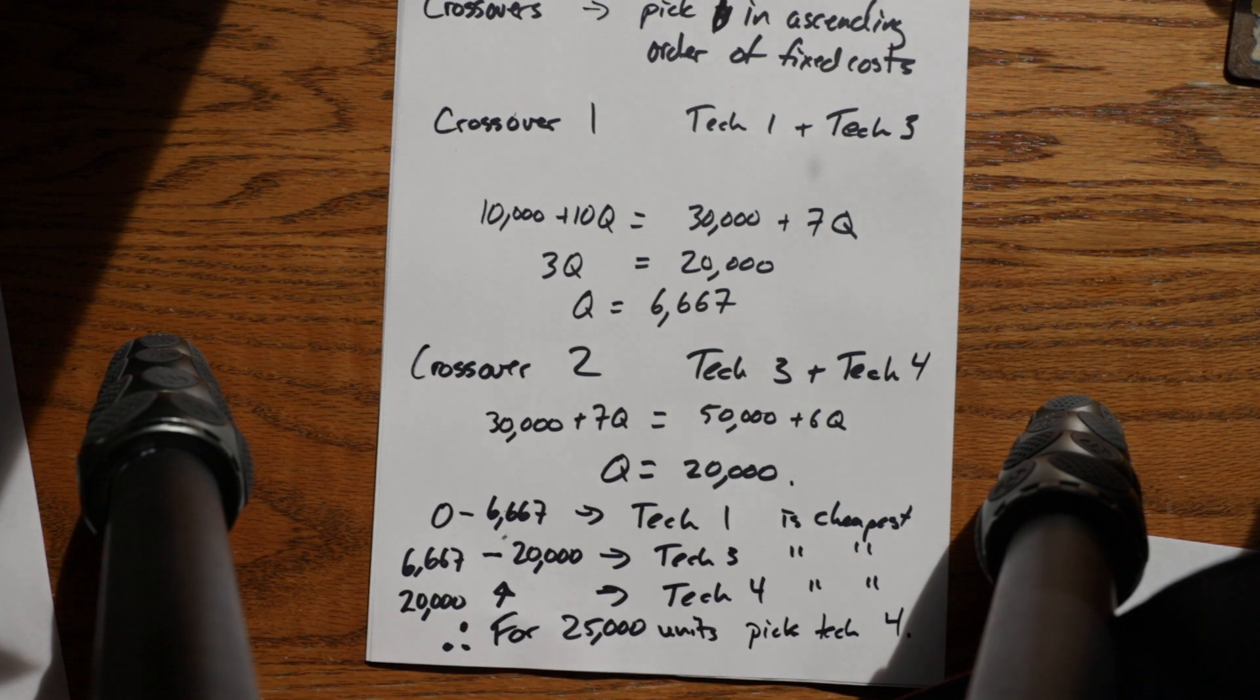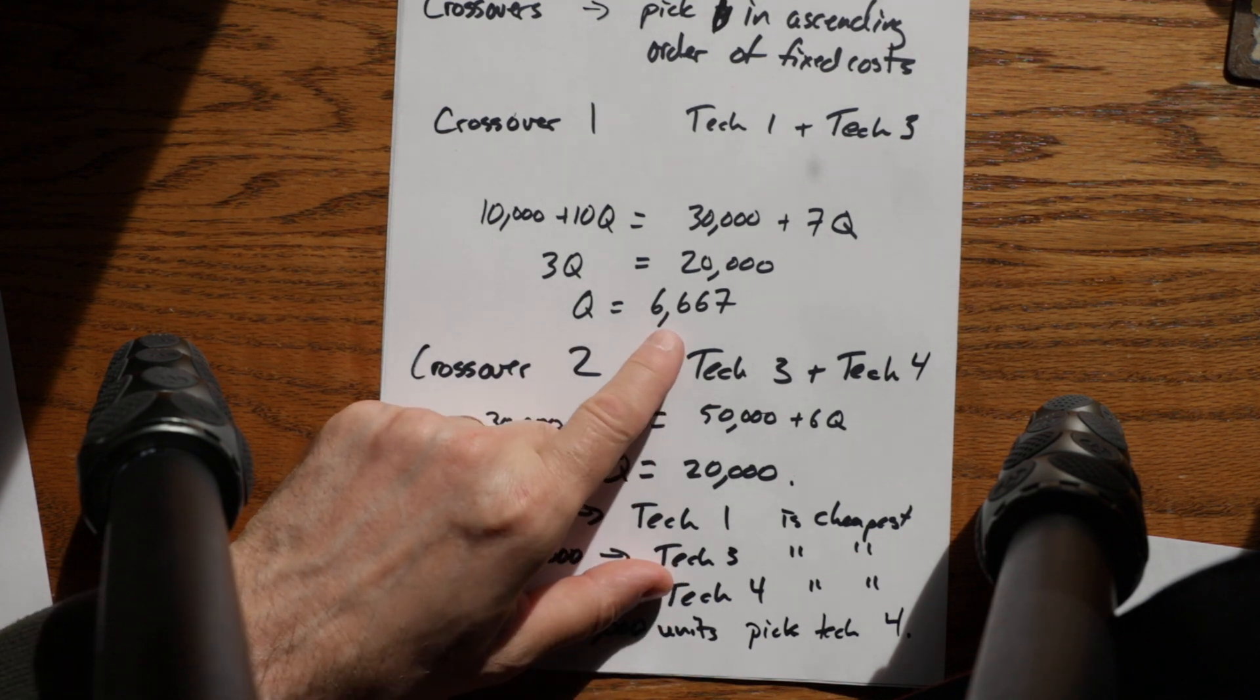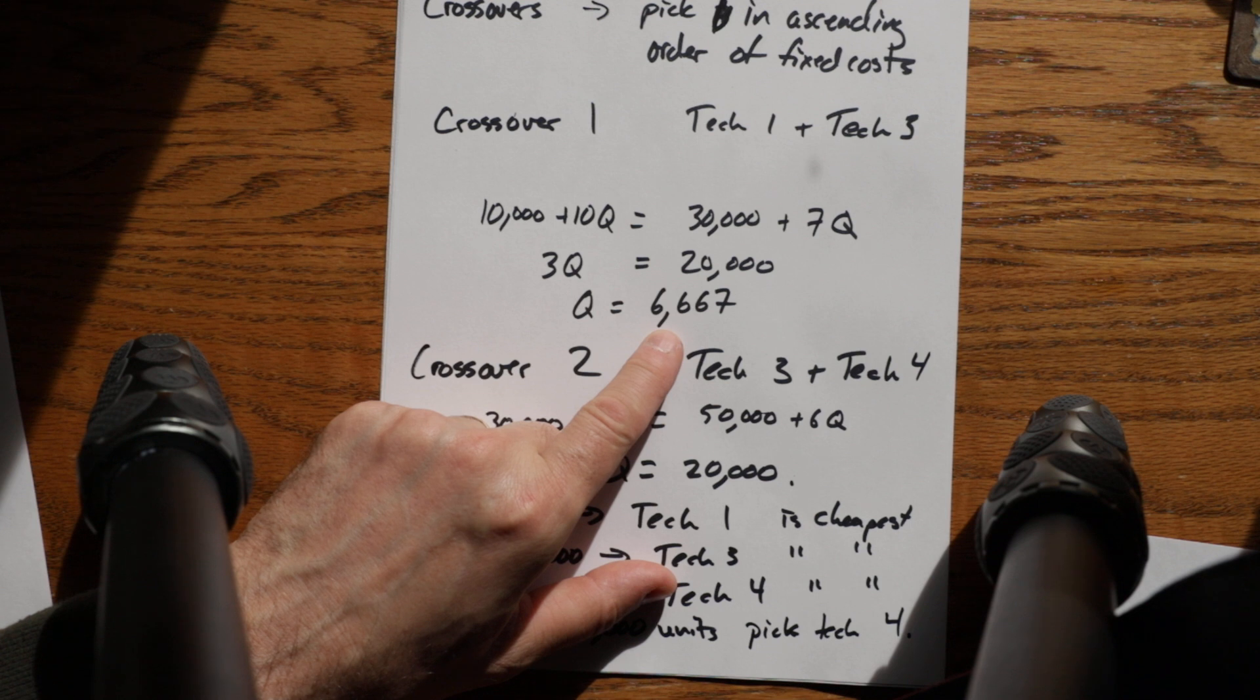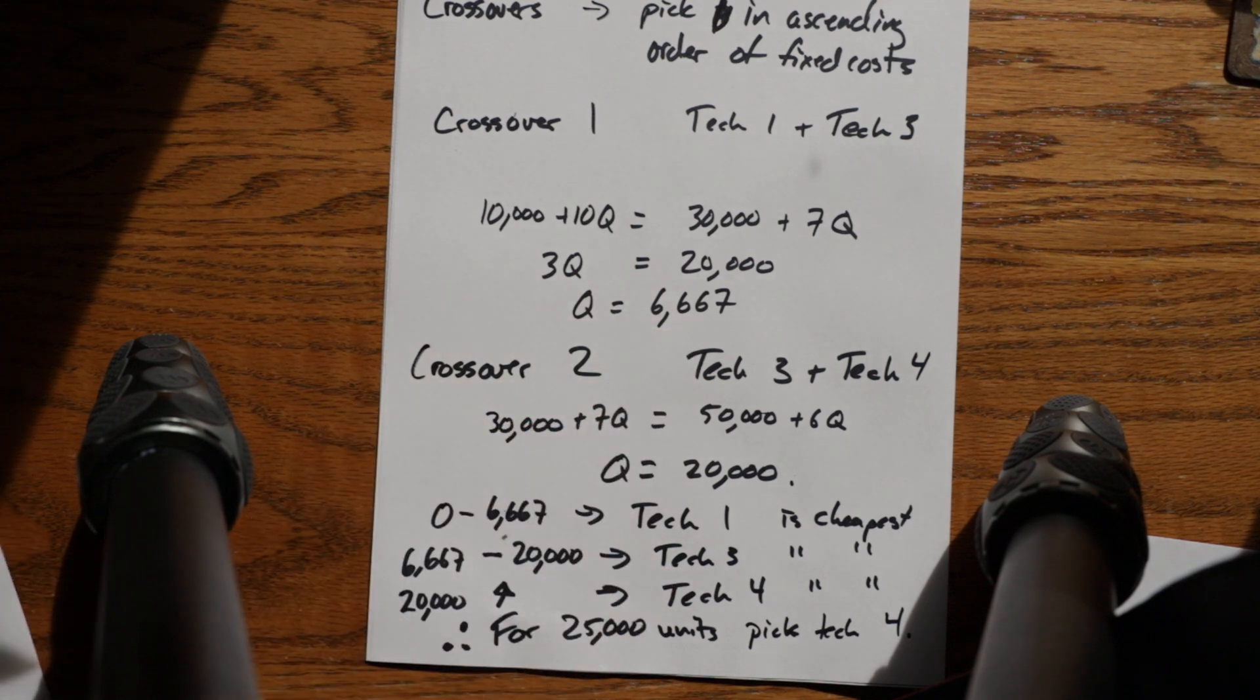And then if the question says for the quantity 6,667, what technology would you choose? You would say I would choose either technology one or technology three at exactly that quantity. And then I would narrow it down depending on how confident I was in the sales numbers. If I thought they were conservative, I'd pick technology three because it's higher. If I thought they were too aggressive and I might not make them, I would pick technology one.